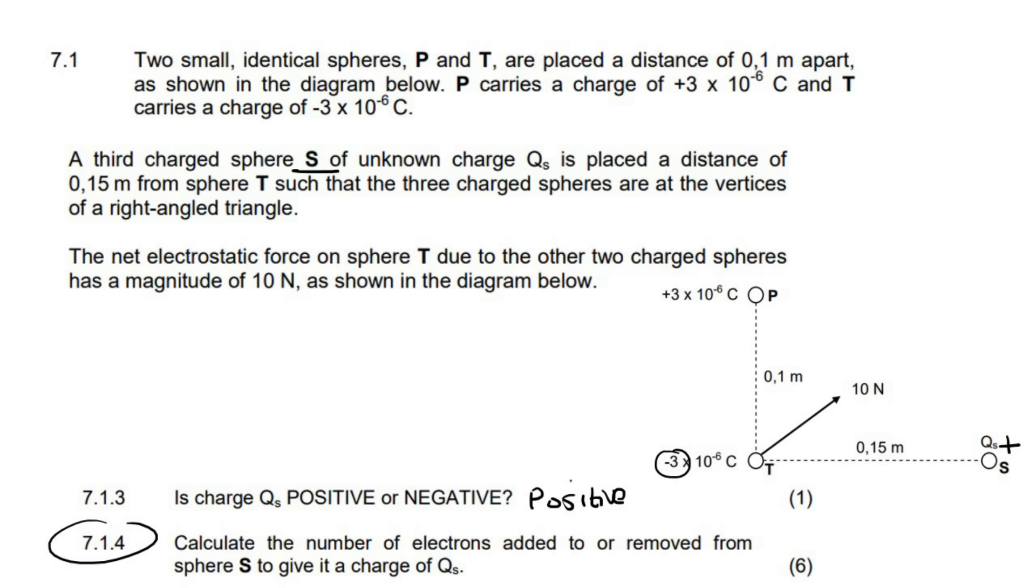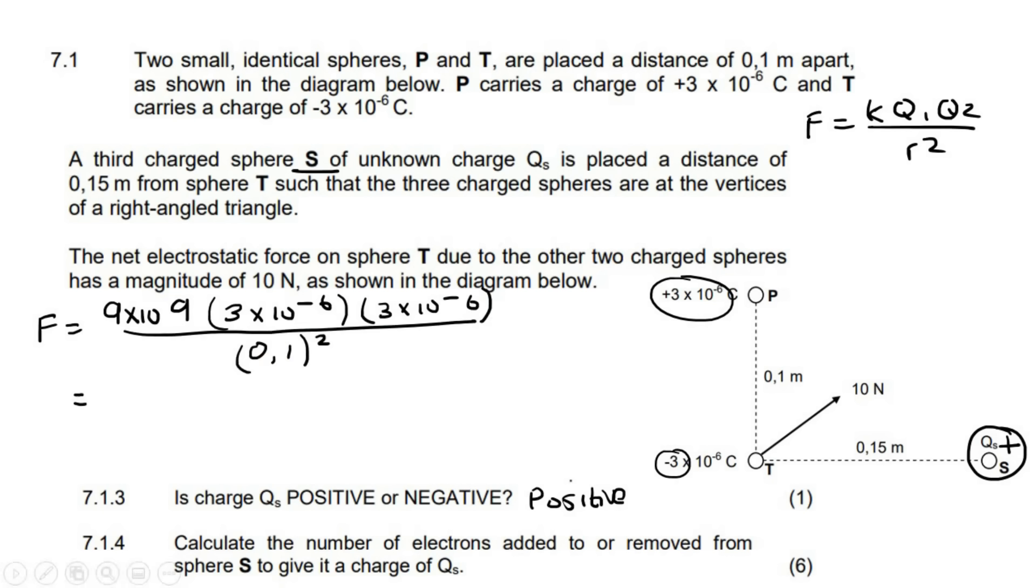This question says, for six marks, calculate the number of electrons that were added to or removed from S to give it a charge of QS. So what we will do is, we need to go and calculate the charge of this. So we'll use the F equals KQ1Q2 over R squared formula for these two. So we could say F is equal to, now K is 9×10^9. Now remember, you don't use negatives in this formula. So the first charge, we can just say 3×10^-6, and the other one is also 3×10^-6. The distance between them is 0.1, remember to square. And this is the force between P and T, and that's gonna be 8.1 newtons.